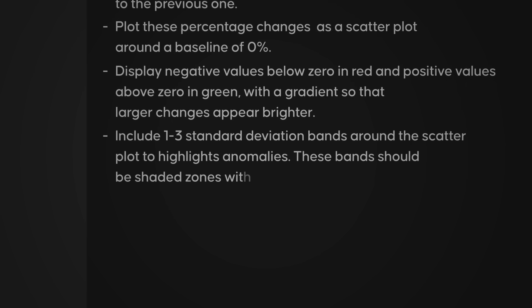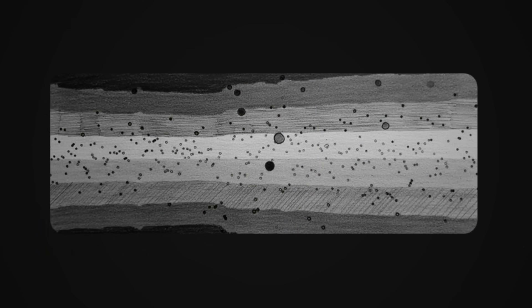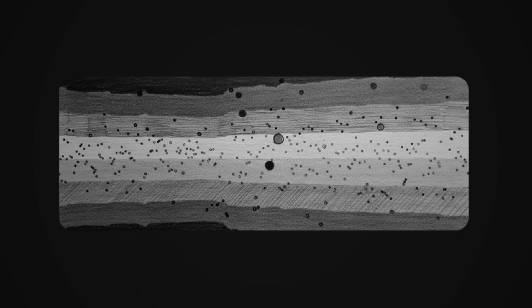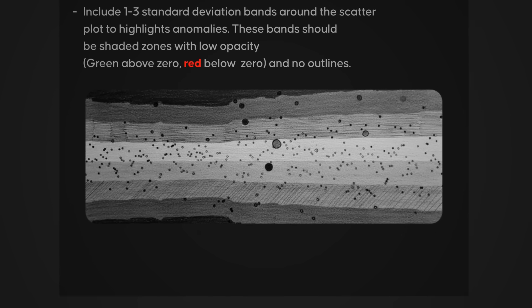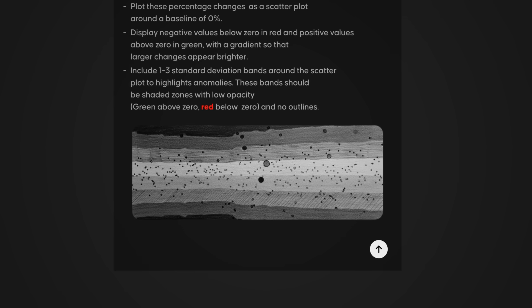Finally, we'll add one to three standard deviation bands around the scatter plot. These will help us quickly identify what's normal movement for an asset and what counts as an anomaly. To keep it clean, the bands won't have outlines — instead, they'll be shaded zones with low opacity, green above the 0 line and red below it. We also have a rough sketch of what we expect this indicator to look like. This isn't necessary, but if you have an idea of how you expect your indicator to look, you can include this image as part of your prompt to help guide the AI. Now we have a solid outline, so we'll send this off to ChatGPT and see how it does.